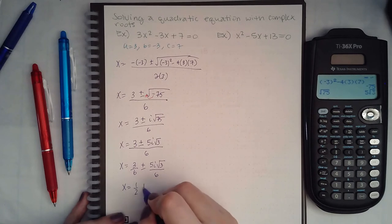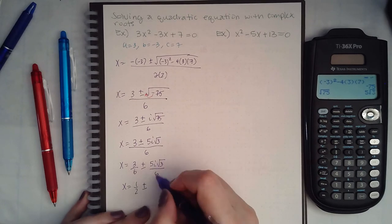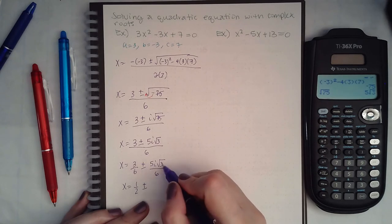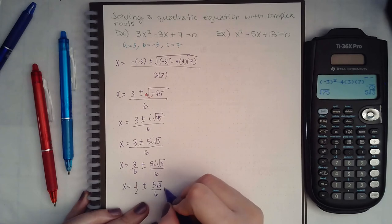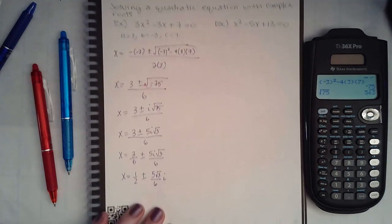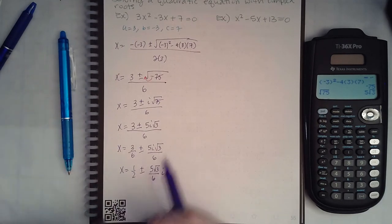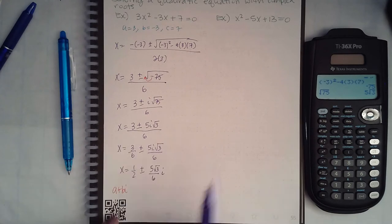If I separate the fraction, I get one half plus or minus 5 square root of 3 over 6 times i. This cannot reduce, you cannot reduce the three and the six because this is inside the radical. The five and six do not reduce, so it literally stays 5 square root of 3 over 6, and then we write the i on the side according to the format a plus bi that we always have to write complex numbers in.